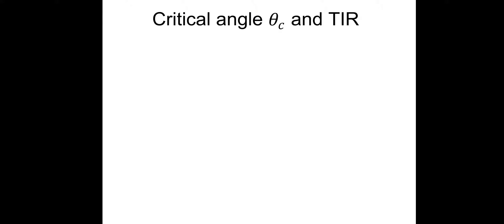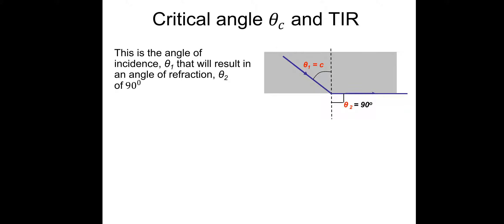Let's move on. So critical angle theta C and TIR, which means total internal reflection. There's a property of light as it travels in a media whereby at a specific angle called the critical angle, which we've got here is theta 1 equals C, the light would refract across the boundary at 90 degrees. So critical angle, this is the angle of incidence theta 1 that results in an angle of refraction theta 2 of 90 degrees.